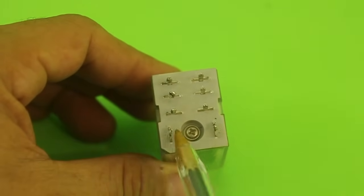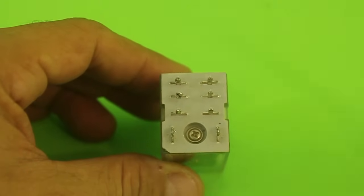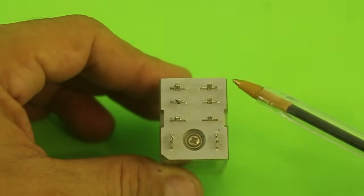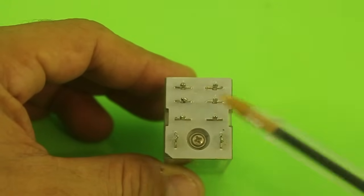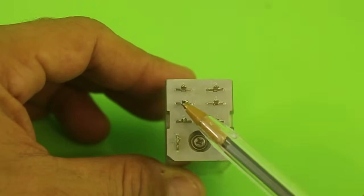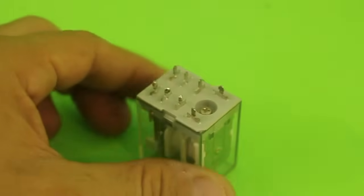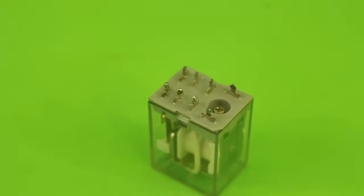Identifying the coil is easy. In this case, these are the contacts of the coil. You will measure some resistance. And here we have common, normally closed and normally open. This is one set of contacts. And we have another set, which also has a common, normally closed and normally open. It will take more time to identify all of them, but the procedure is the same.